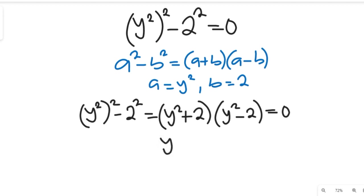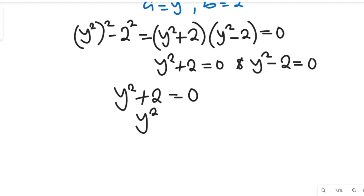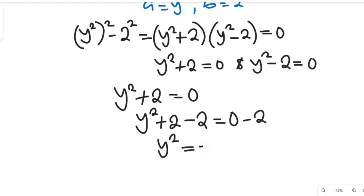So we'll have two equations: y squared plus 2 equal to 0, and y squared minus 2 equal to 0. Taking the first one, y squared plus 2 equals 0 — we subtract 2 from both sides, giving us y squared plus 2 minus 2 equals 0 minus 2. So plus 2 minus 2 gives us 0, and we have y squared equal to negative 2.